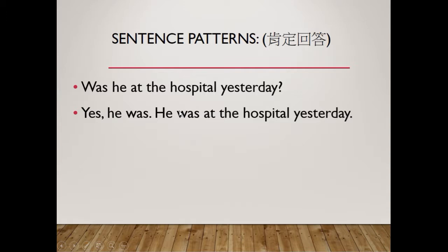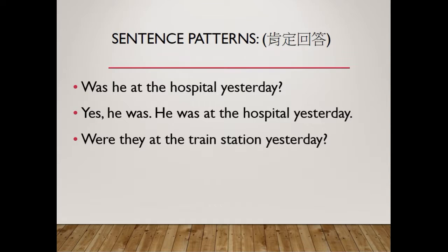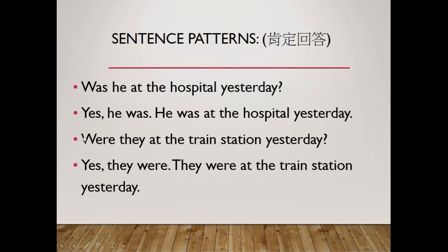Another example: 'Were they at the train station yesterday?' It's 'they', so it's 'were they'. The answer is: 'Yes, they were. They were at the train station yesterday.' As you can see, 'were they' in a yes/no question — when you answer yes, it's 'they were'. Very similar to the way we use sentences in the present simple tense.